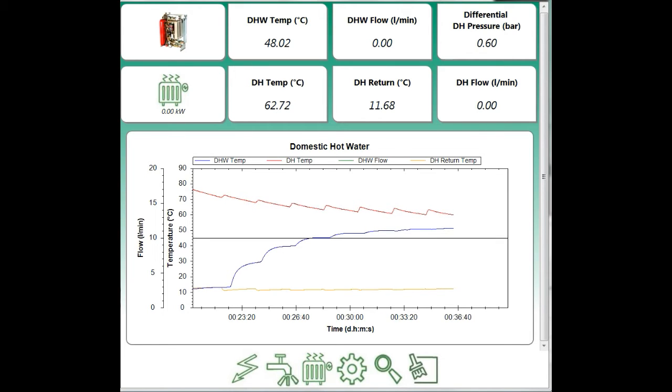The district heating return temperature is still very cold. It's still in a region of 12 degrees C. So the water that we're letting into the heat exchanger hasn't yet made it all the way through to the other side of the heat exchanger. At some point soon we should start to see a rise in the return temperature.